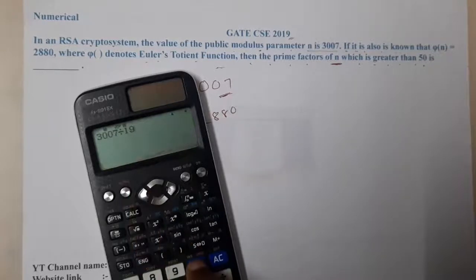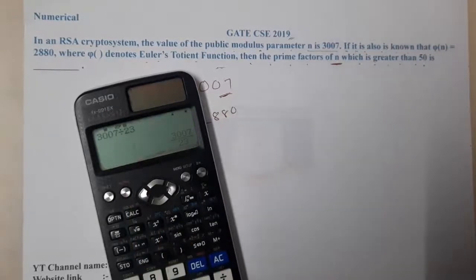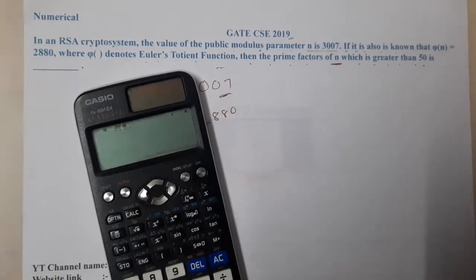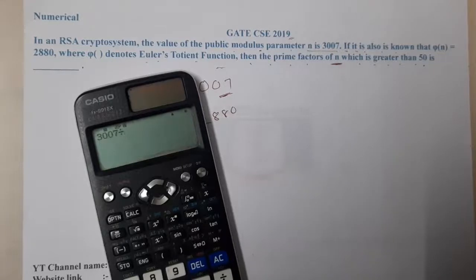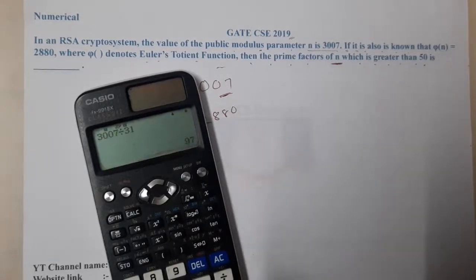Nope. So after 19, the prime number is 23, no. Oh my god, till where should I go? 29, so again no. After that, the other prime number is 31.